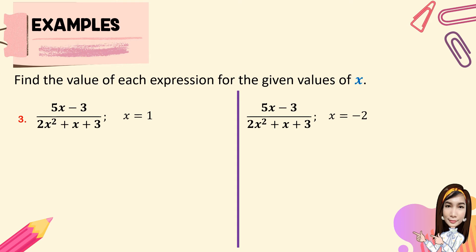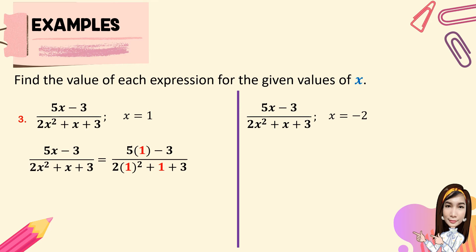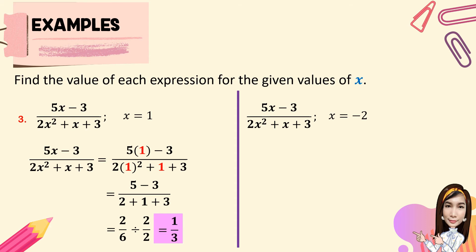For number 3, we have 5x minus 3 all over 2x squared plus x plus 3. When x equals 1, substitute all values of x with 1: 5 times 1 minus 3, all over 2 times 1 squared plus 1 plus 3. Performing the operation: 5 times 1 is 5 minus 3. For the denominator, 1 squared is 1, times 2 is 2, plus 1 plus 3. So 5 minus 3 is 2, and the denominator is 2 plus 1 plus 3 which is 6. Reducing 2 over 6 by the GCF of 2 gives 1 over 3. The value when x equals 1 is 1 third.